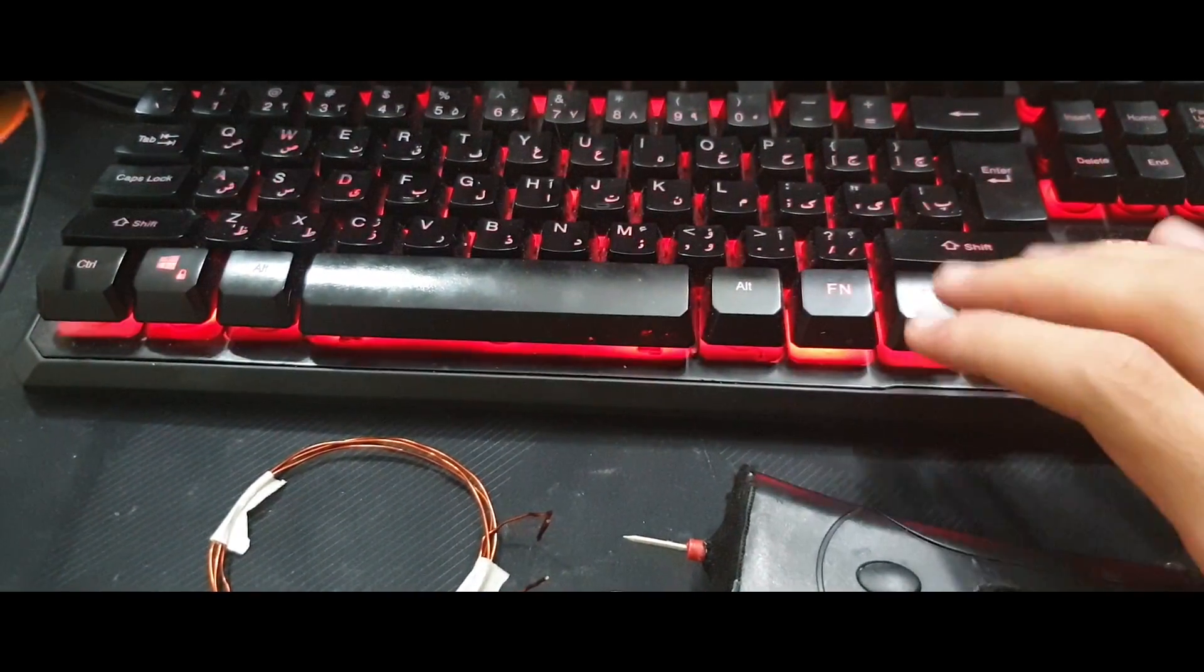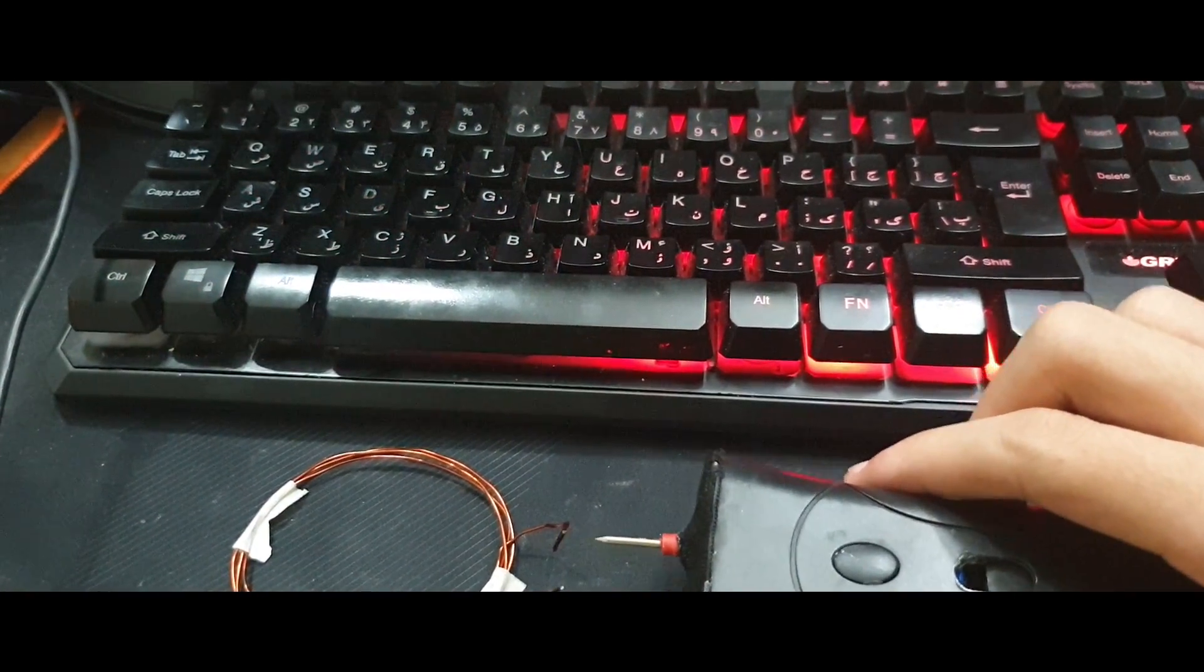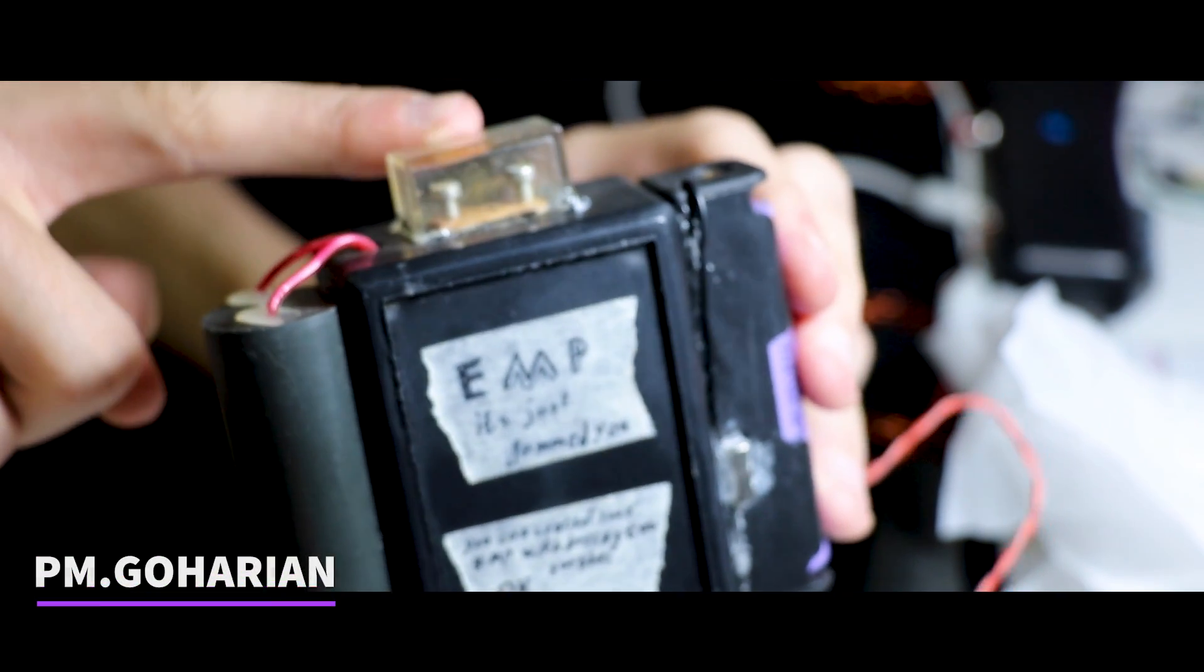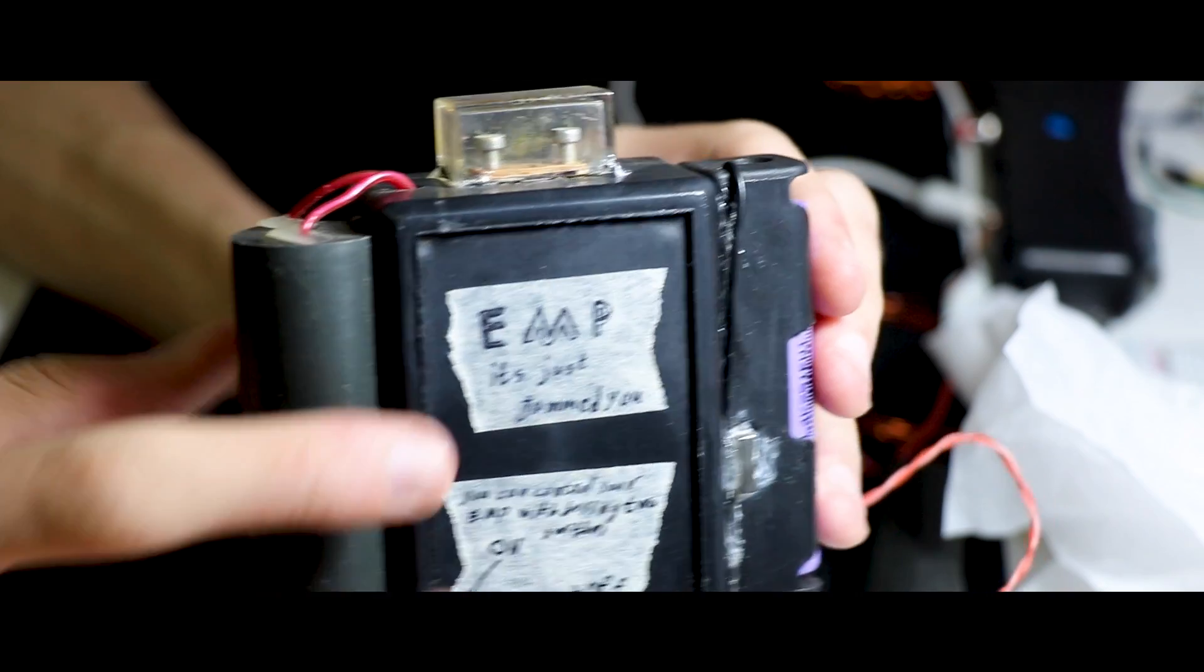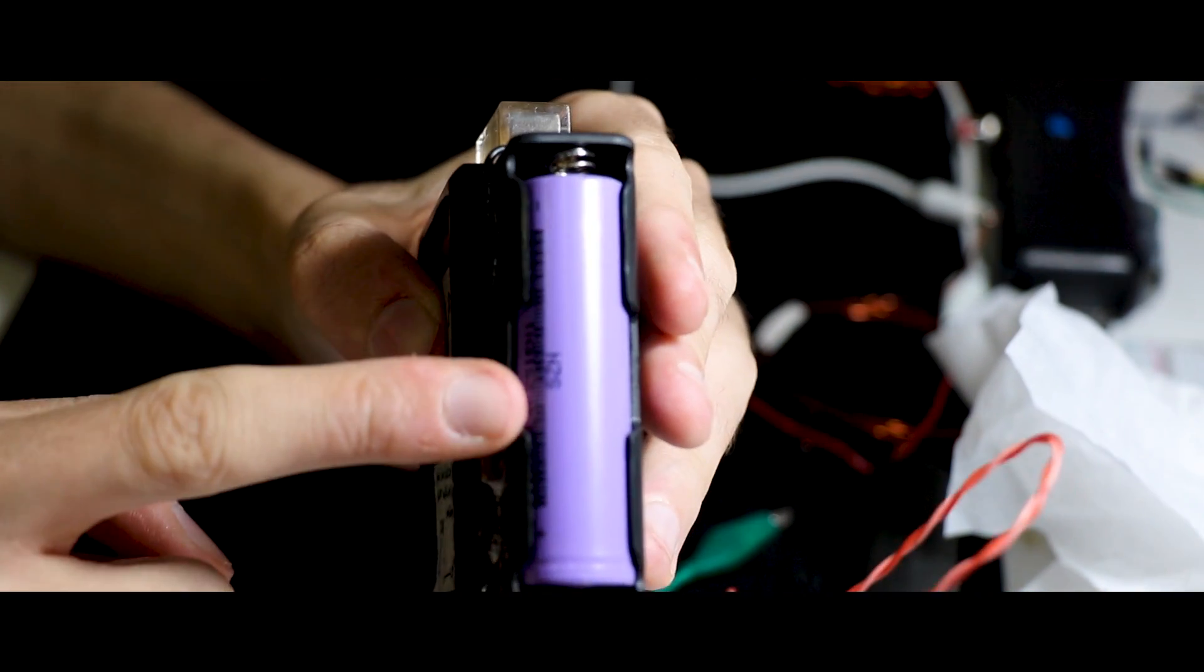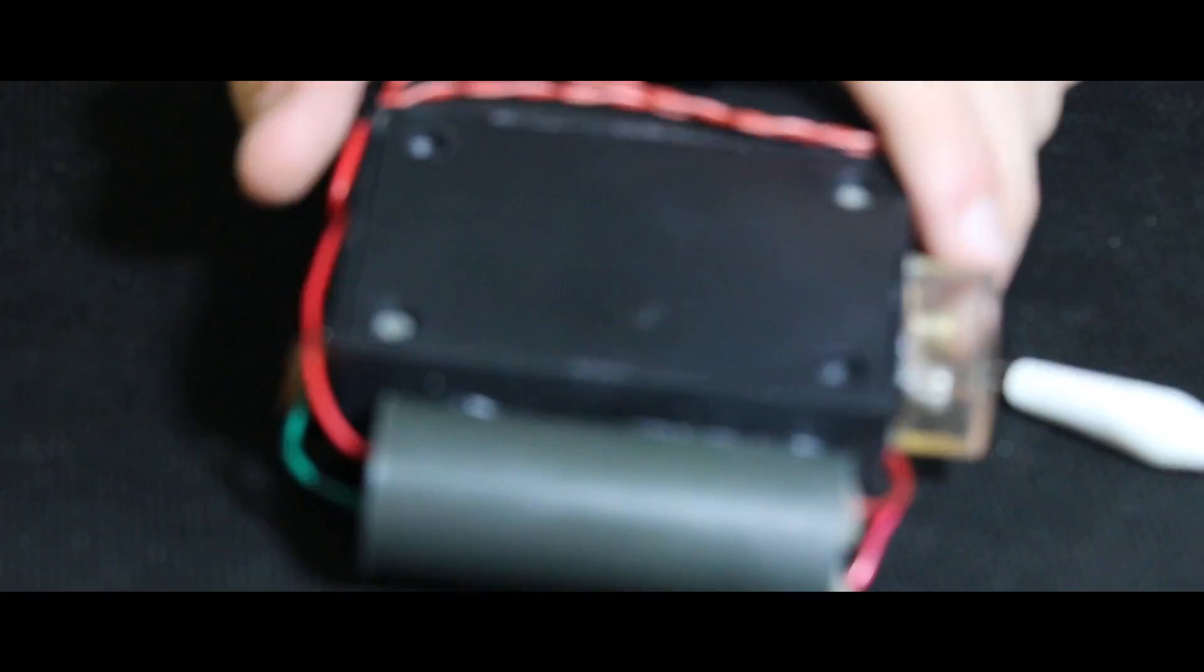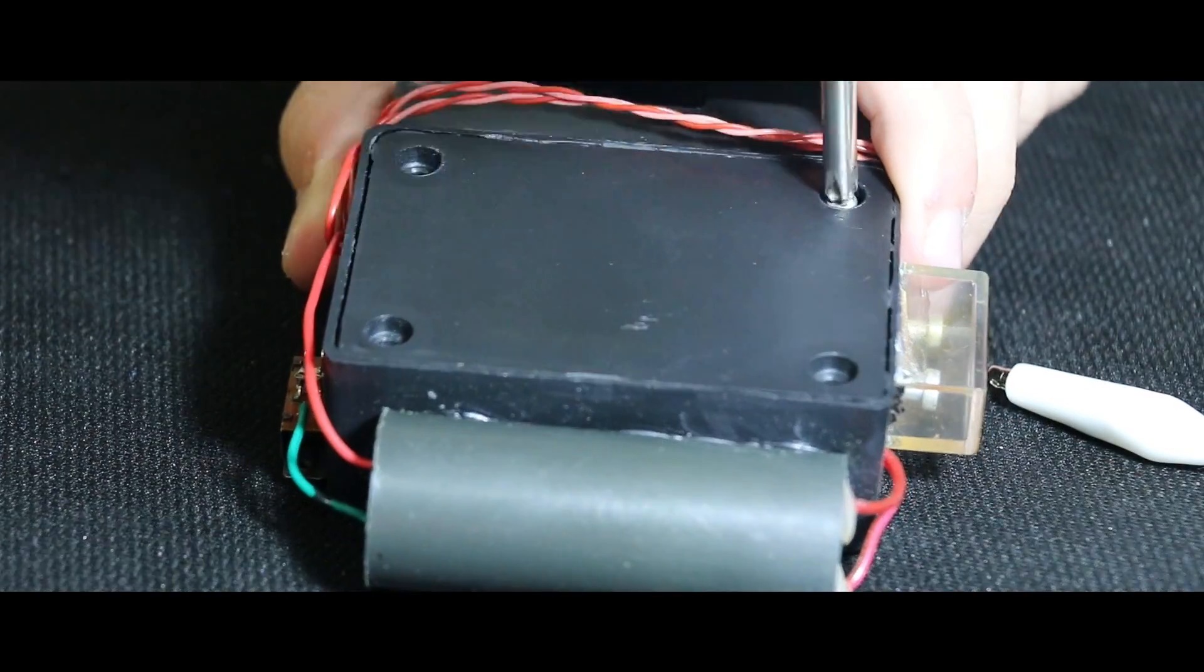An electromagnetic pulse or EMP, also sometimes called a transient electromagnetic disturbance, is a short burst of electromagnetic energy. Such a pulse's origin may be a natural occurrence or man-made, and can occur as a radiated electric or magnetic field or a conductive electric current depending on the source.